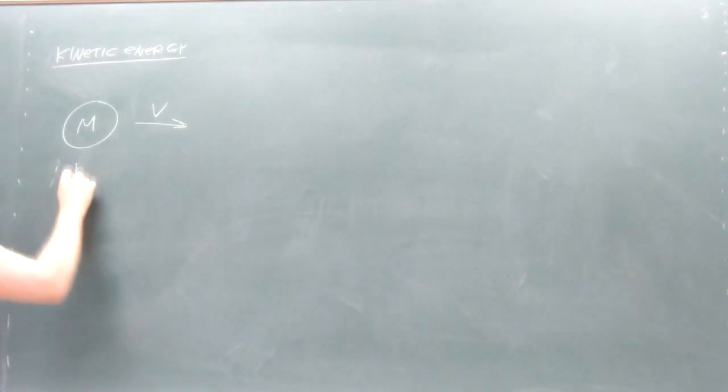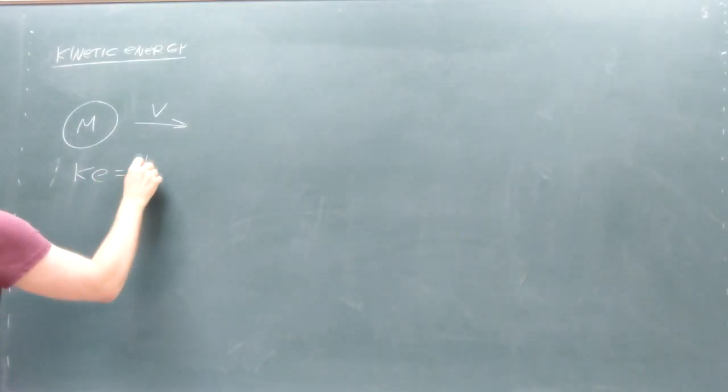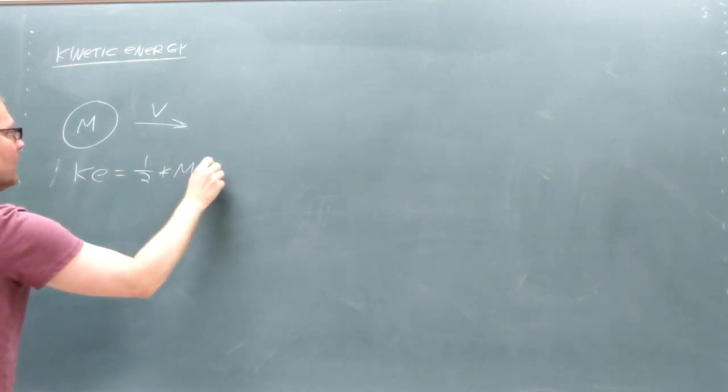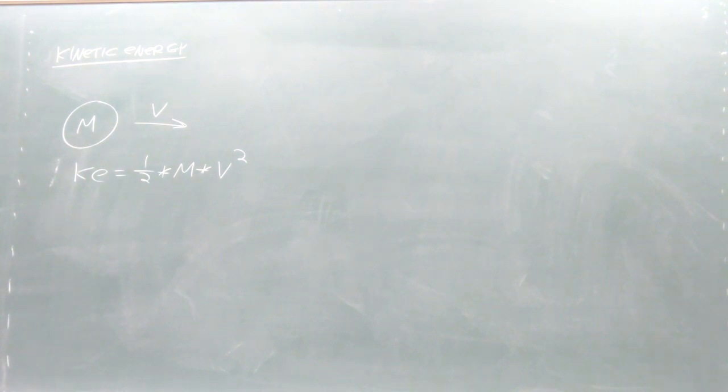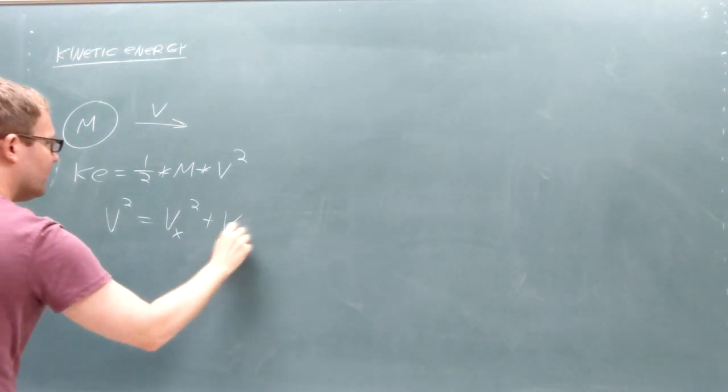We can calculate the kinetic energy of our projectile as one half times the mass of the projectile times the square of the projectile's velocity. Since velocity is a vector, this square is calculated using the Pythagorean theorem.